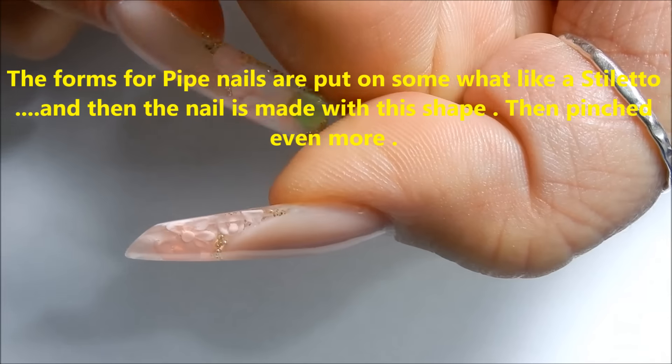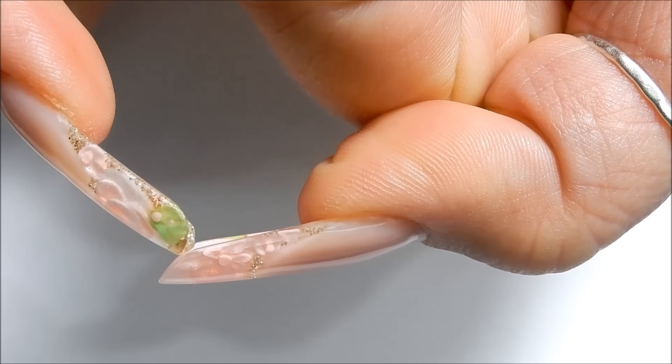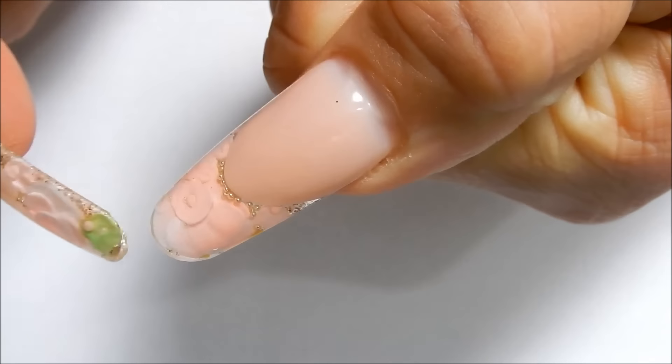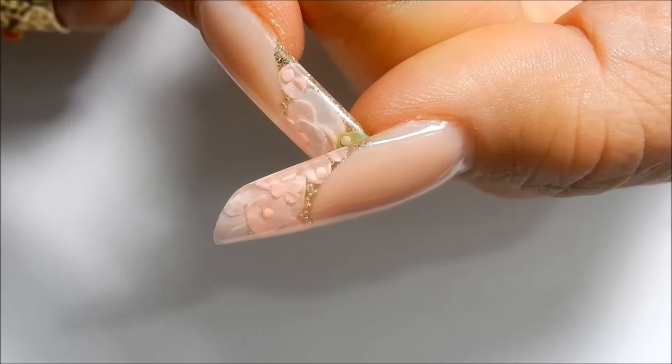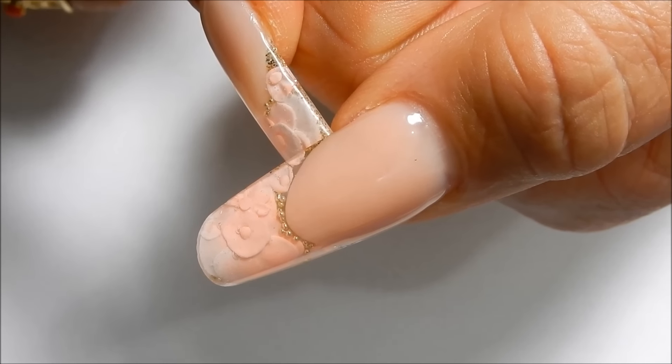But they do have kind of the shape. Pipe nails do have that kind of slant to it and they do kind of look rounded. This just changes the shape, gives you a different look, and I'm going to show you how we do that.